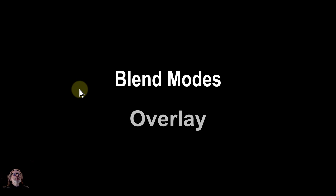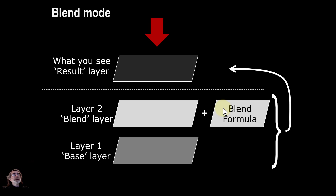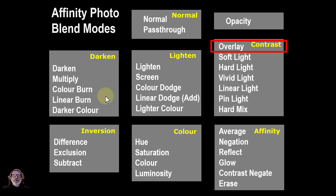Hello and welcome to In Affinity. We're going to look now in our series on blend modes at the overlay blend mode, which is the first in the series on contrast. As a reminder, blend modes work so that there's a base layer underneath, another layer on top — the blend layer — and a formula results in what you actually see. The darkened group and lightened group we've looked at, so now we're looking at what's called the contrast group.